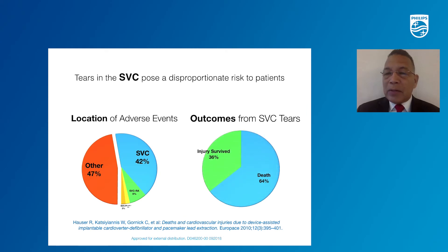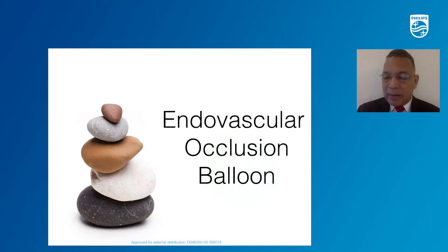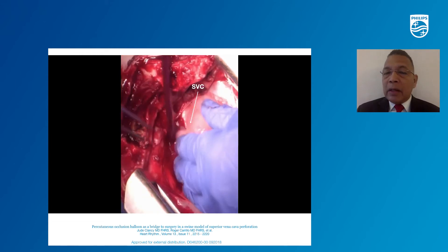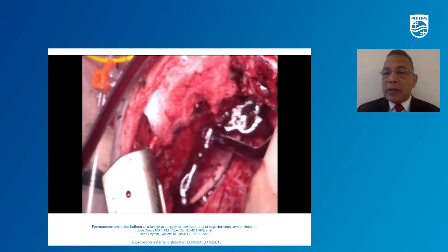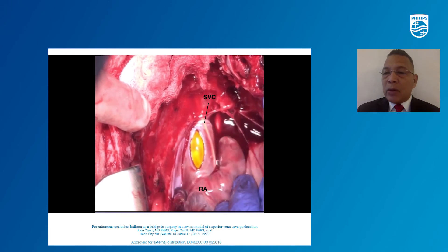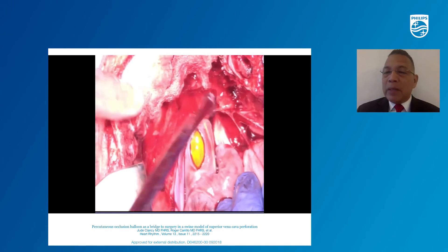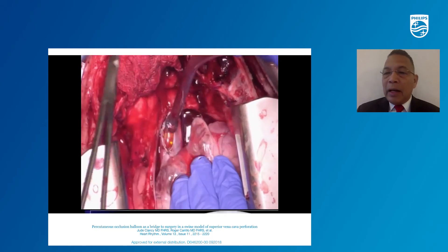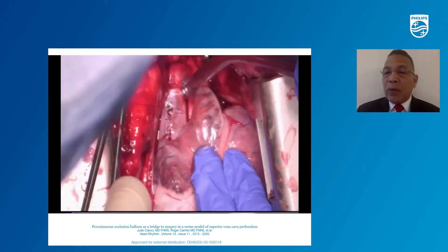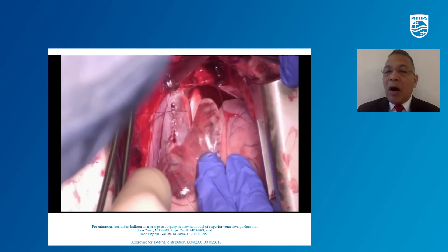Superior vena cava lacerations account for half of the events, but they are the most lethal. For that, we use an endovascular occlusion balloon. As we see in this model, the superior vena cava is being opened and you can see immediate exsanguination. Once we deploy the endovascular occlusion balloon, there is decreased bleeding from the injury. In this model the SVC also contains leads, and as you can see, we can repair the superior vena cava injury off bypass just with the use of the balloon.